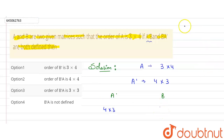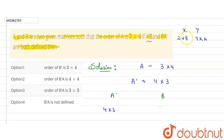Suppose we have two matrices X and Y. They can be multiplied — that is, the product is defined — when the number of columns in X equals the number of rows in Y. For example, if order of X is 2×4, then order of Y should be 4×(any value). The inner values must match.